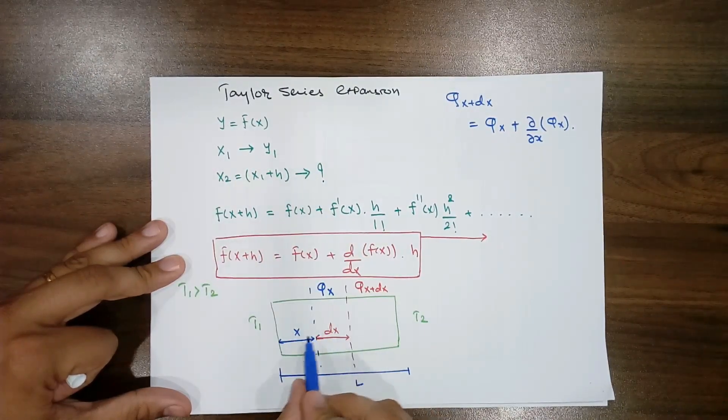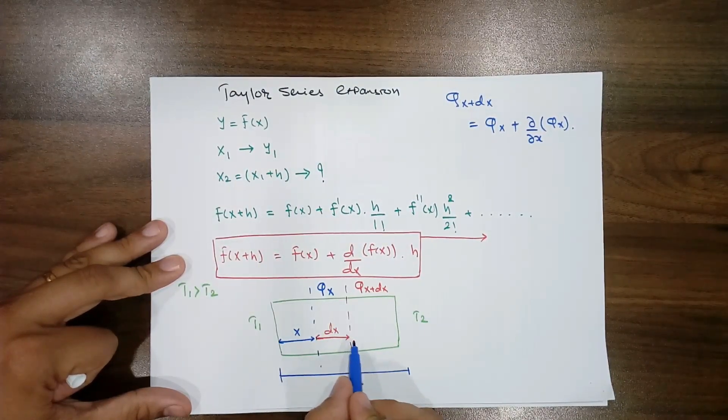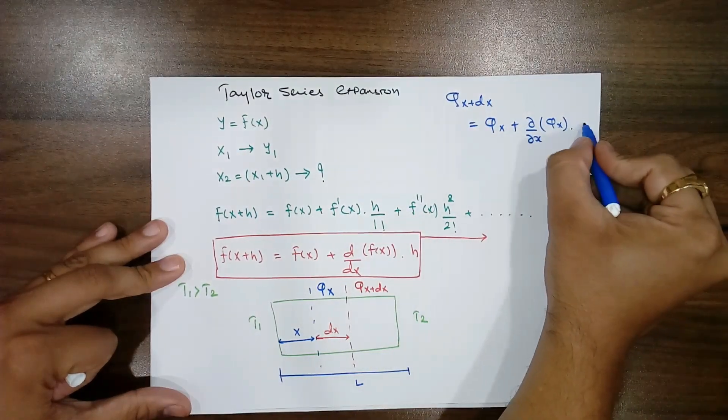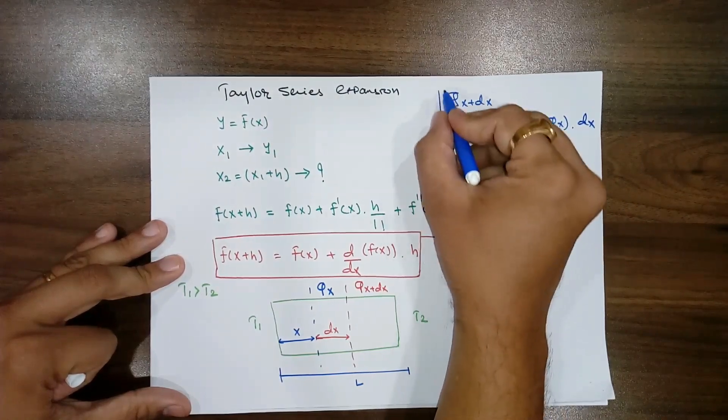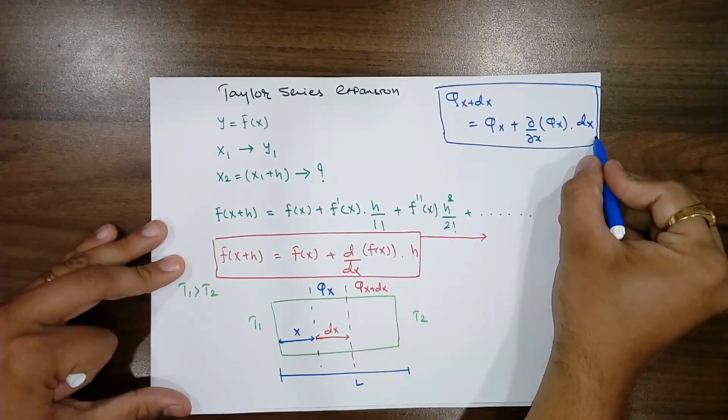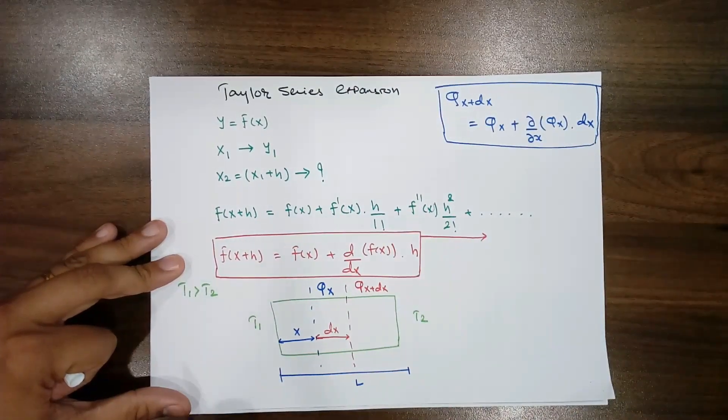h means the distance between this x1 and x2, so here there is two planes, one is at x, another is at x plus dx, so the distance between the two is dx, so here you would write a dx. This is very important expressions that we need to use in derivations of general heat conduction equation.